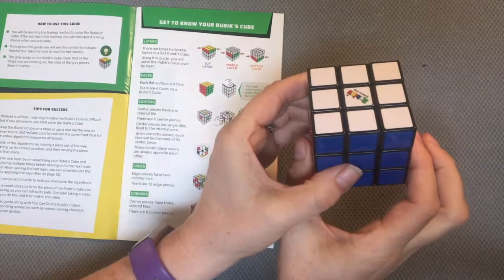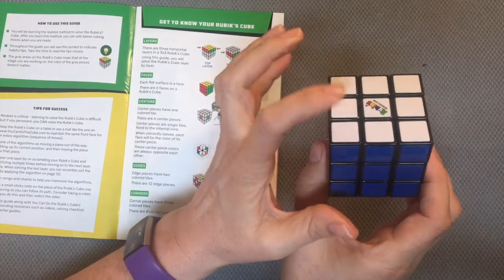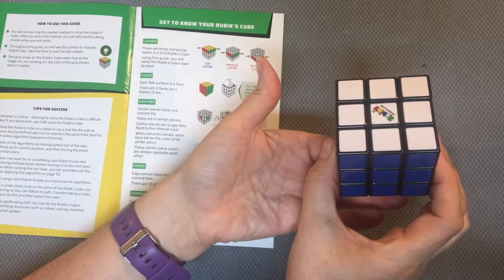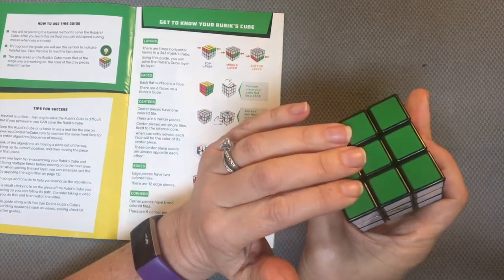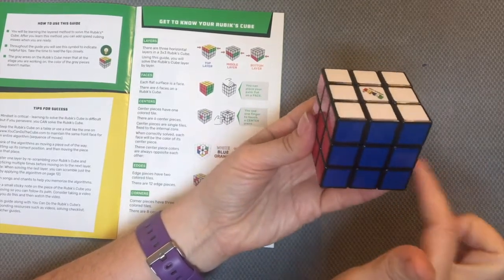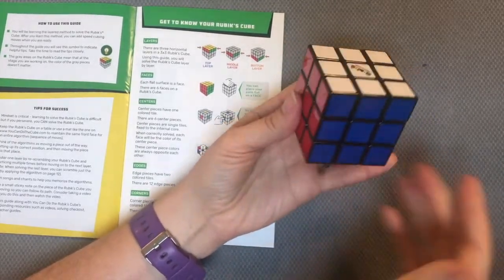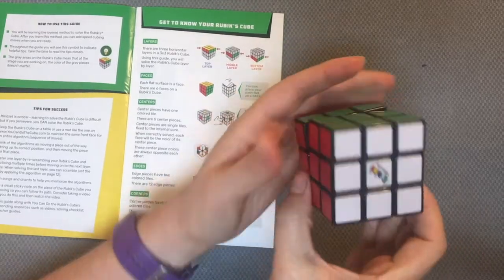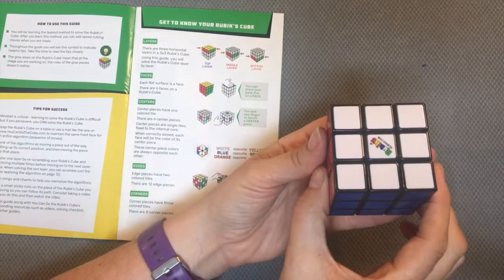So left, front, right, up, down, and don't forget the back. You might want to do a little chant. Left, front, right. Left, front, right. Up, down, up, down. Don't forget the back. So those are the faces.